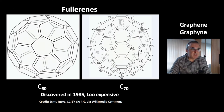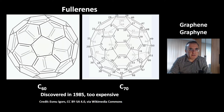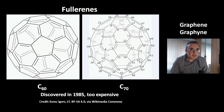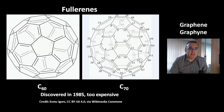This is another allotrope of carbon: the fullerenes. They were discovered in 1985. There are many versions of them — these are just two examples: C60, which is like a soccer football, and C70. They are very interesting compounds — you can add functional groups to these molecules and do all kinds of chemistry. But they have one disadvantage: they are just too expensive, and that's why they didn't really make it to mass production.